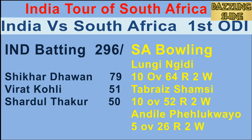Second ball of the 43rd over, Shamsi to Bhavi — Bhavi chips it towards the fielder and the catch is taken. Bhavi is gone for four. First ball of the 46th over, Jensen to the fielder at the crease — a top edge goes to deep fine leg for four runs.